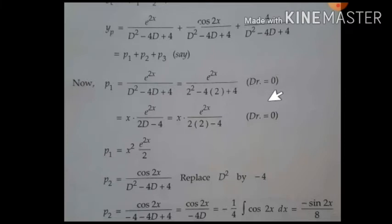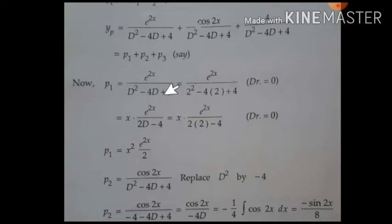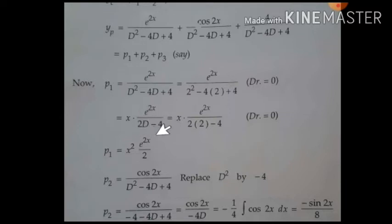When the denominator is 0, introduce x and differentiate f(d): derivative of d² is 2d, derivative of −4d is −4, and derivative of the constant is 0. Replace d by 2: 2(2) − 4 = 0 again. So continue introducing x, giving x². Differentiating again: derivative of 2d is 2, derivative of −4 is 0. Now the d term is eliminated and we have the final answer for P1.